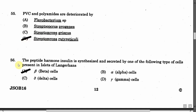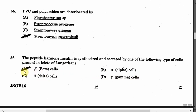The next question is: The peptide hormone insulin is synthesized and secreted by one of the following types of cells present in the islets of Langerhans. Option A: Beta cells. Option B: Alpha cells. Option C: Delta cells. Option D: Gamma cells. The correct answer is Option A, that is Beta cells.